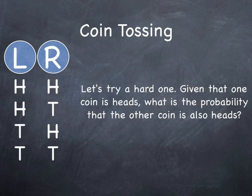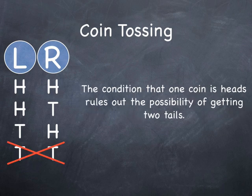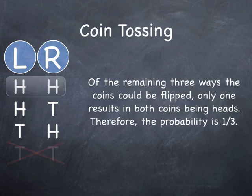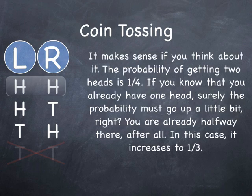Let's try a hard one. Given that one coin is heads, what is the probability that the other coin is also heads? It is not 1 half. You have to be careful here. The condition that one coin is heads rules out the possibility of getting two tails. Of the remaining three ways the coins could be flipped, only one results in both coins being heads. Therefore, the probability is 1 third. The probability of getting two heads is 1 fourth, but if you know you already have one head, it increases to 1 third.